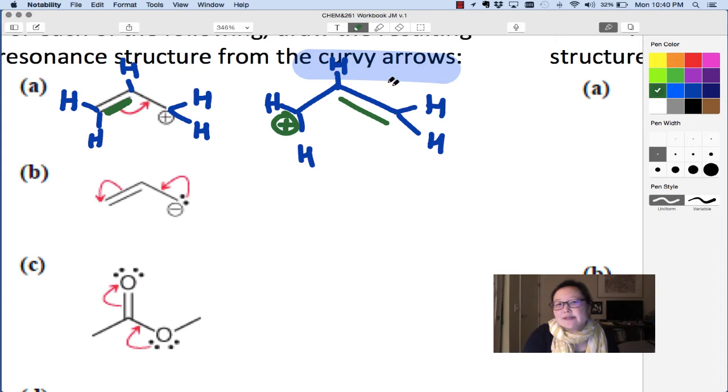Now you might say, how is this a resonance structure? Isn't this the same thing as that? Actually, not necessarily. If I had an experiment where this carbon, we'll call it carbon number one, was a special kind of carbon, like carbon 14 or a different isotope, I could actually track it and see that it might be different from this carbon. So there's that idea.